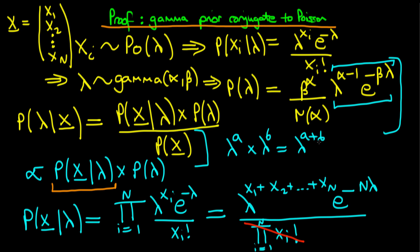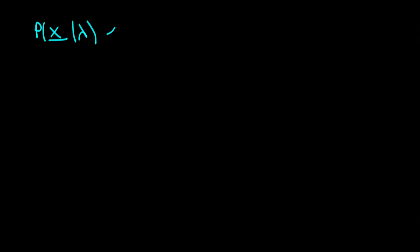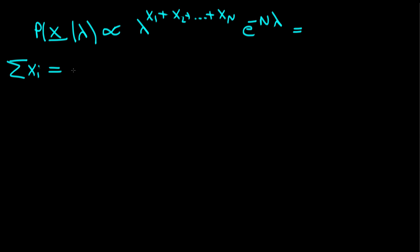Moving to a new clean slide to write down the prior and formulate the posterior: the probability of our vector of observations given lambda is proportional to lambda to the power x1 plus x2 all the way through to xn, times e to the power minus n lambda. We can simplify the first term by noting that the sum of xi equals n times x̄, so this becomes lambda to the power n times x̄, times e to the power minus n lambda.